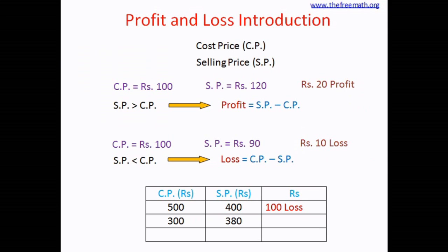The next problem: CP equals 300 and SP equals 380. You're selling at a higher price, so it's a profit. 380 minus 300 equals 80 rupees of profit. The next: cost price is 1000 rupees and selling price is 800 rupees. It cost more than the selling price, so this is a loss. 1000 minus 800 equals 200 rupees of loss.